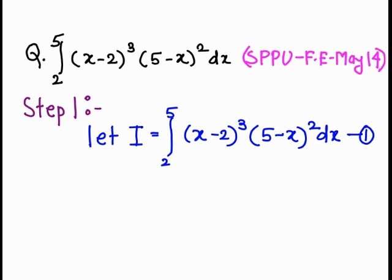Consider Step 1: let I equal to the integral from 2 to 5 of (x minus 2) raised to 3 times (5 minus x) raised to 2 dx — call this equation 1.